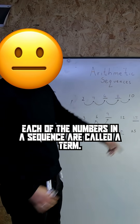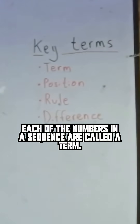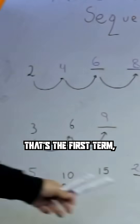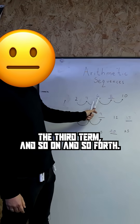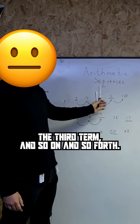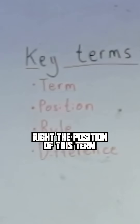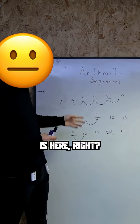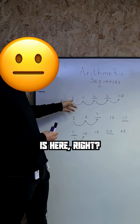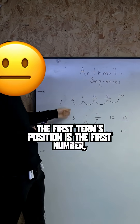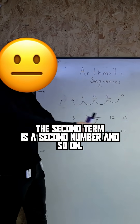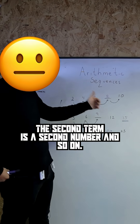Each of the numbers in a sequence are called a term. That's the first term, the second term, the third term, and so on and so forth. The position of this term is here — the first term's position is the first number, the second term is the second number, and so on.